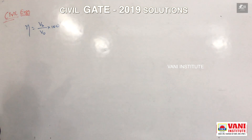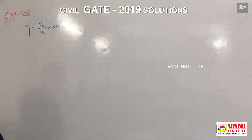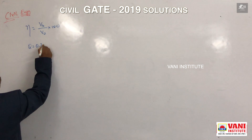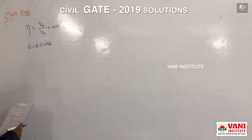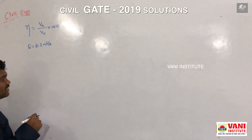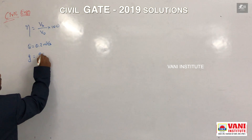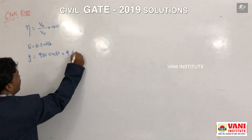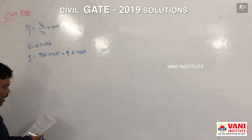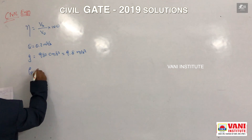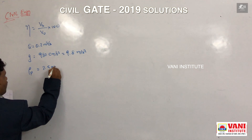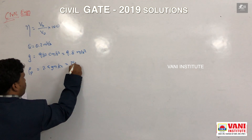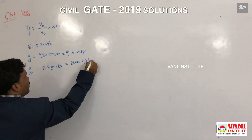Let us note the data given in the question. First, the flow rate is given as 0.2 meter cube per second. Gravitational acceleration G is given as 980 centimeter per second square; if we convert it to meters, it will be 9.8 meter per second square. Density of the particle is given as 2.5 gram per cubic centimeter; if converted to kg, it will be 2500 kg per meter cube.